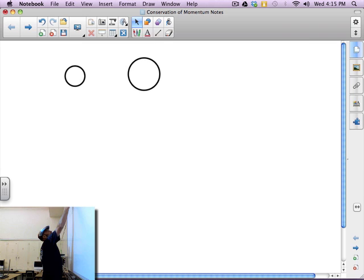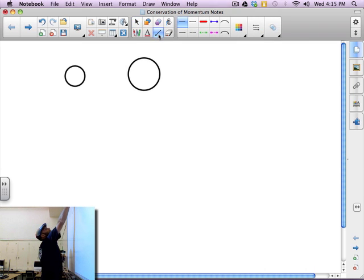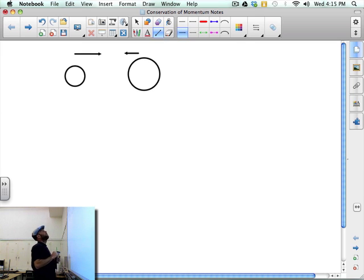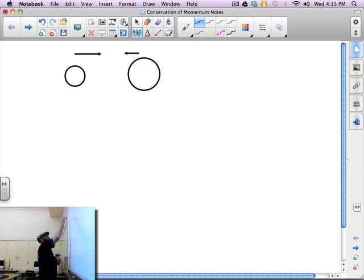they're moving towards each other. So this guy is moving this way, this guy is moving this way. And then after, we'll call them object 1 and this object 2, and this is before collision.